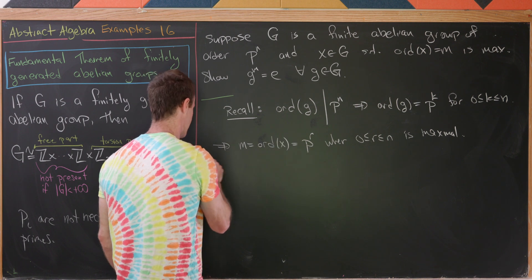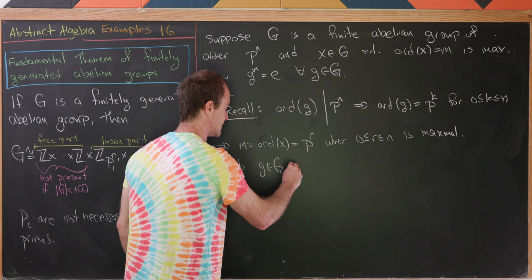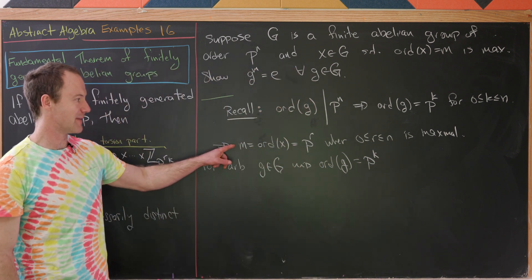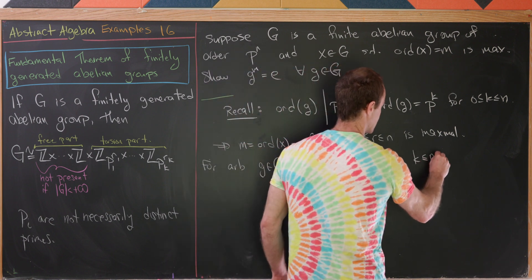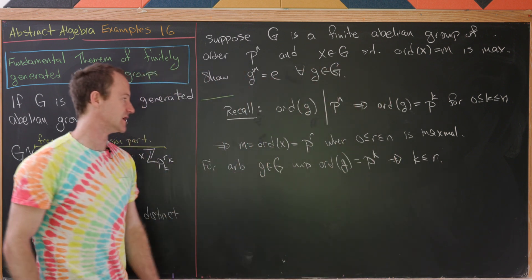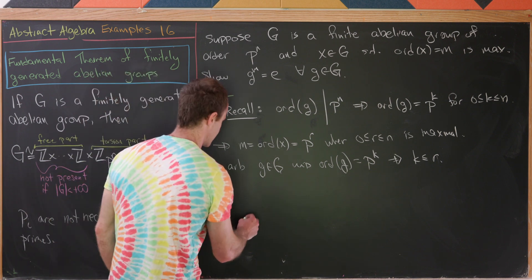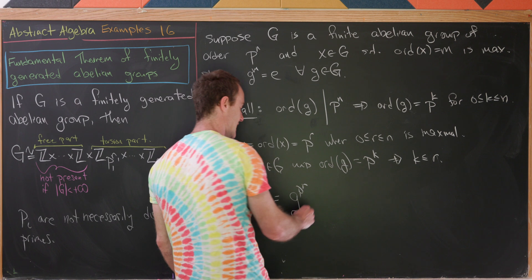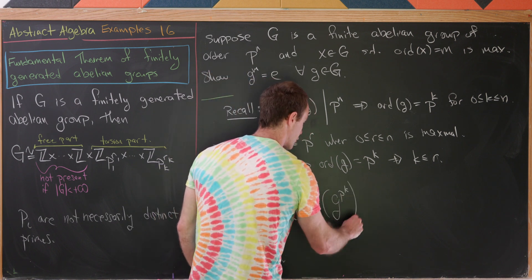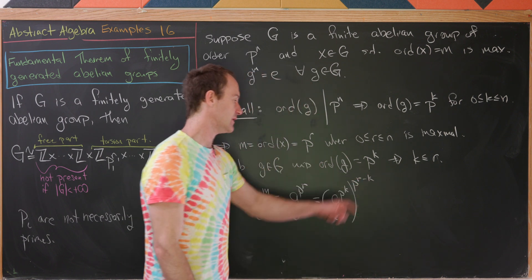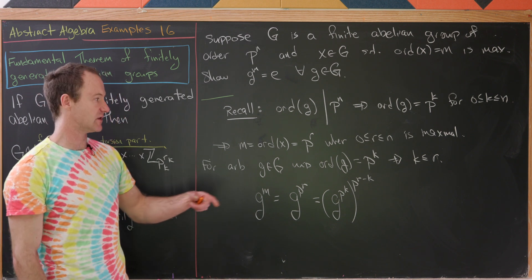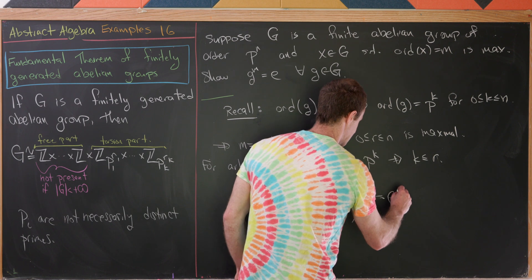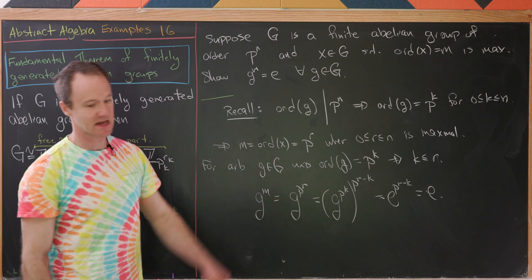So let's use this fact right here. For some arbitrary G in G, we know from above that the order of G is equal to P to the K. Also, we know by the maximality here that K is less than or equal to R. Again, that's by the maximality of the order of X. And now we're essentially ready to just finish this calculation off. Notice that G to the M is now G to the P to the R based off of the form of M. But now that's going to be equal to G to the P to the K raised to the power P to the R minus K. And we know P to the R minus K is P to a non-negative number by this setup right here. But notice that G to the P to the K is G to the order of G. So that's the identity. So this is the identity to the P to the R minus K. But that's simply the identity. But that's exactly what we wanted.